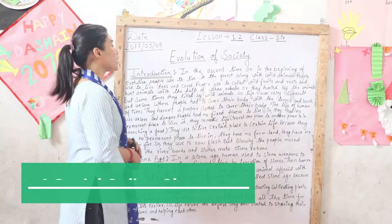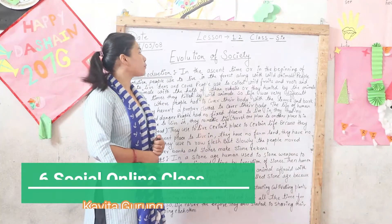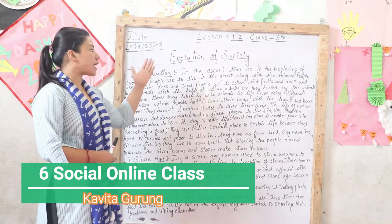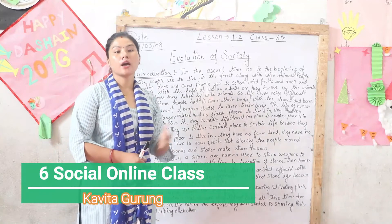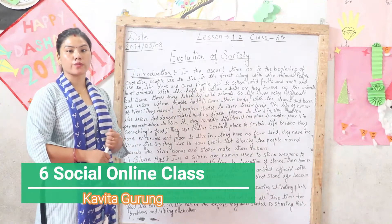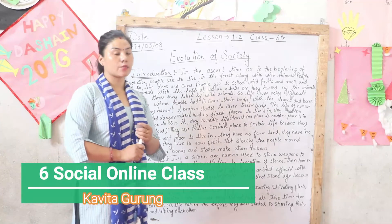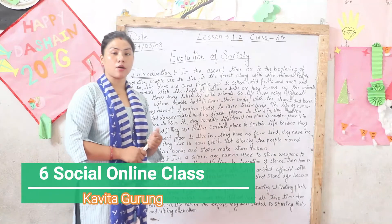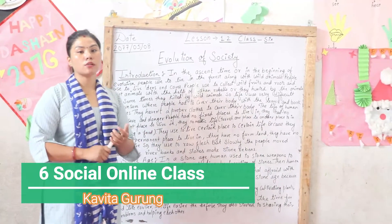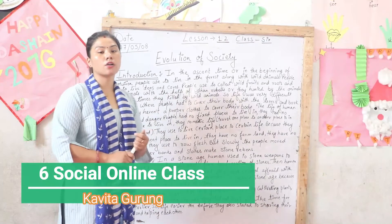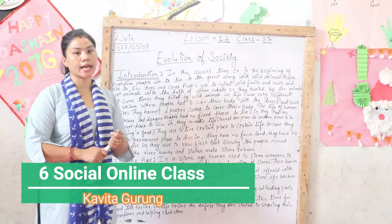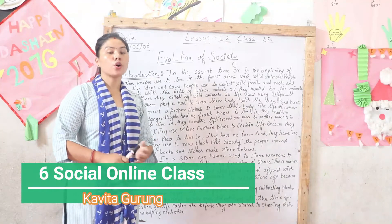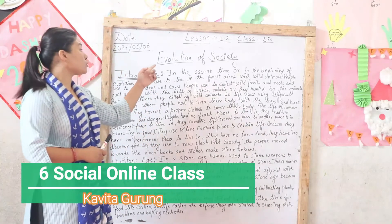Hello class. Today we are starting new lesson 1.2. The lesson name is Evolution of Society. Before we start this lesson, let's recall what we learned in our previous classes. We learned what is community and how community forms, about society and how society forms, and the difference between society and community, and the importance of both. So today we are learning about the evolution of society.